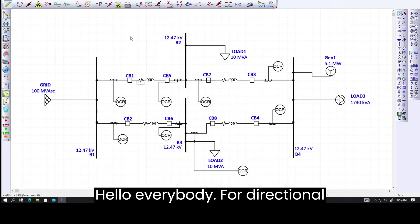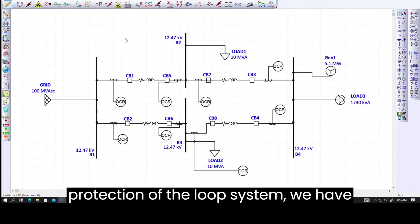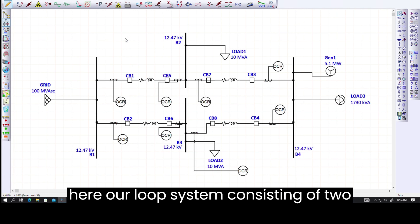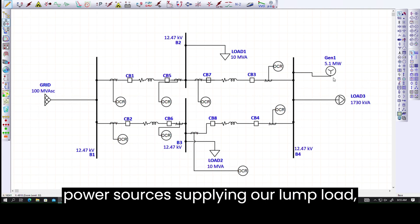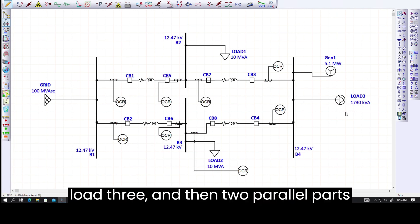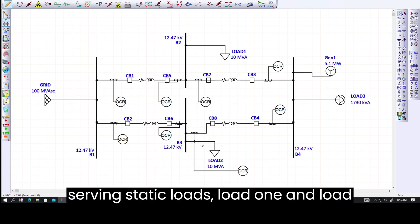Hello everybody. For directional protection of the loop system, we have here our loop system consisting of two power sources supplying our lump load, load 3, and then two parallel parts serving static loads, load 1 and load 2.